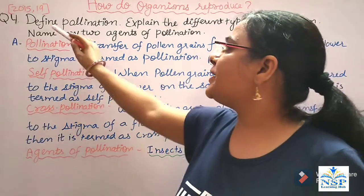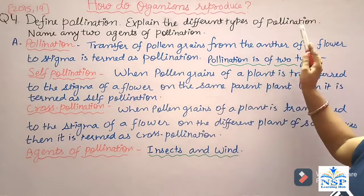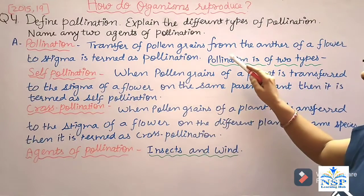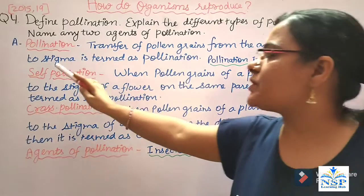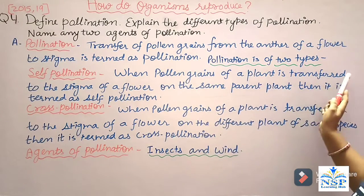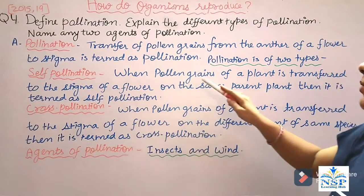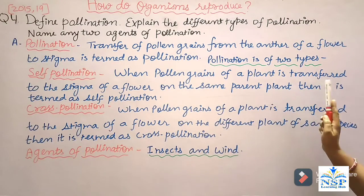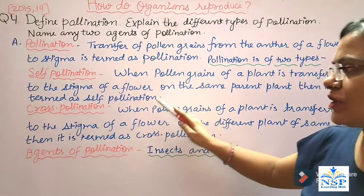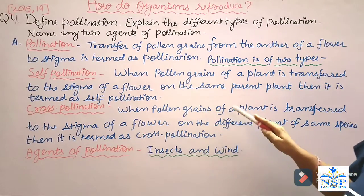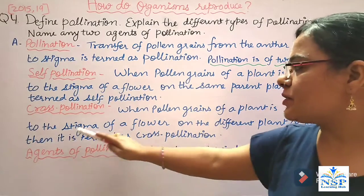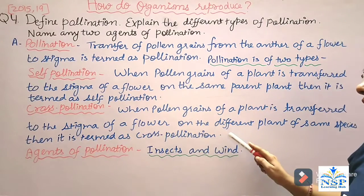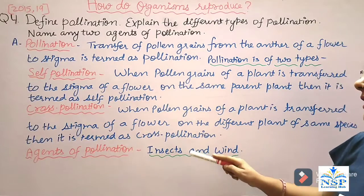The next important question is: define pollination, explain the different types of pollination, and name any two agents of pollination. Pollination is the transfer of pollen grains from the anther of a flower to the stigma. Pollination is of two types. Self-pollination: when pollen grains of a plant are transferred to the stigma of a flower on the same parent plant. Cross-pollination: when pollen grains of a plant are transferred to the stigma of a flower on a different plant of the same species. The agents of pollination are insects and wind.